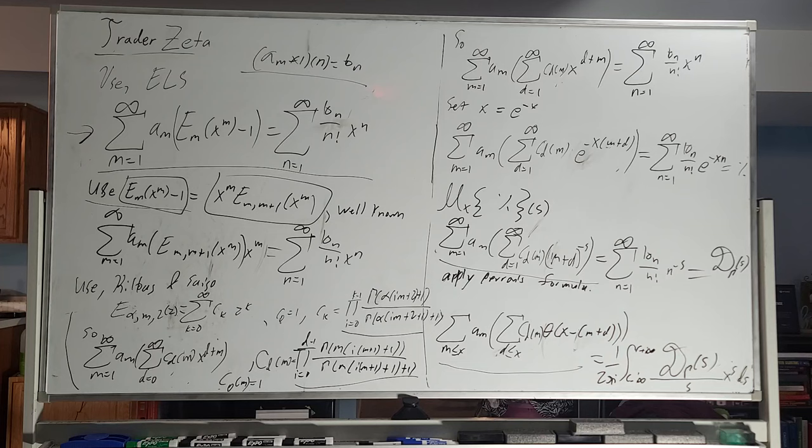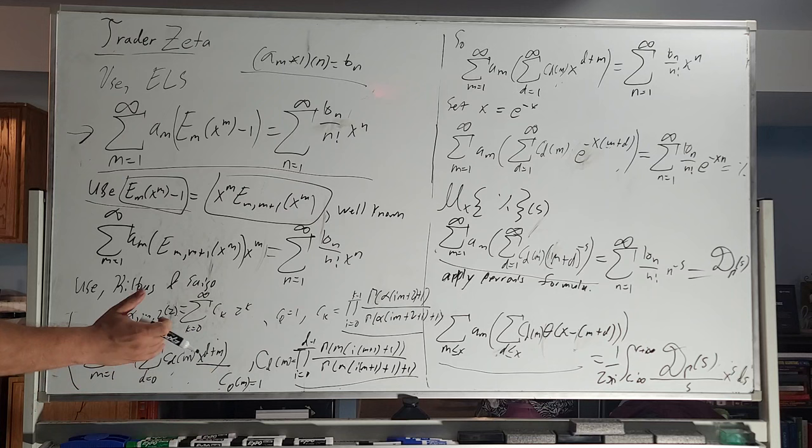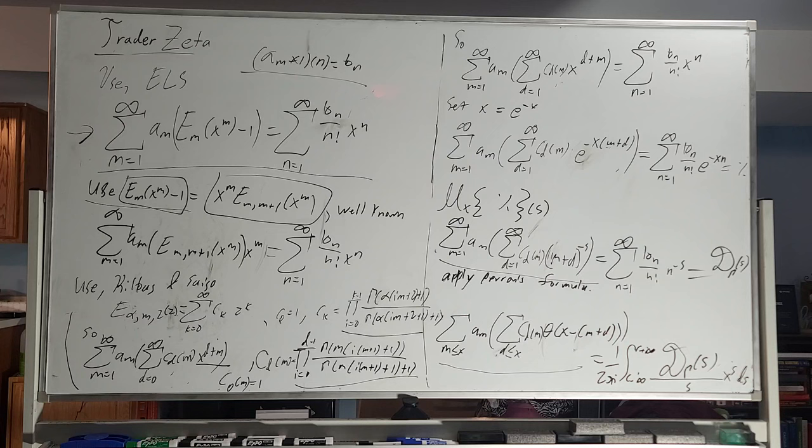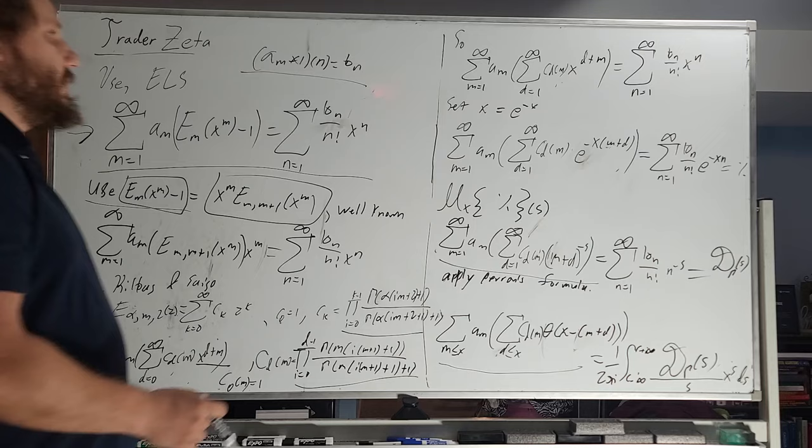All right, very nice. So as you can see, this x to the d plus m, all of a sudden, we went from d times x to the d times m, now we're x to the d plus m, which is kind of a huge step forward because it's kind of like undoing the multiplicity of things, right? This was multiplication, now it's addition. Very cool.